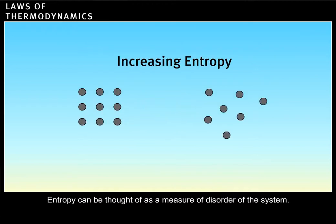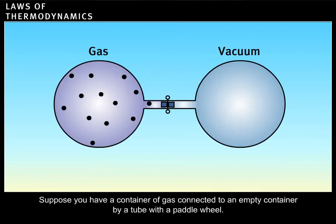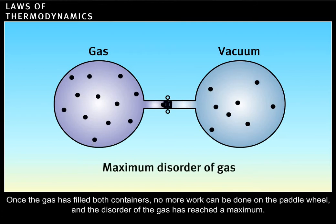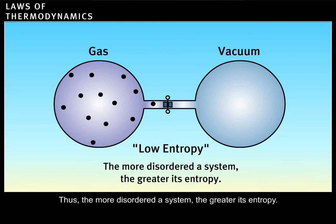Entropy can be thought of as a measure of disorder of the system. Suppose you have a container of gas connected to an empty container by a tube with a paddle wheel. As the gas flows to fill the empty container, it does work on the paddle wheel, and the disorder of the gas increases. Once the gas has filled both containers, no more work can be done on the paddle wheel, and the disorder of the gas has reached a maximum. Thus, the more disordered a system, the greater its entropy.